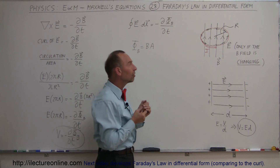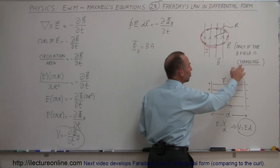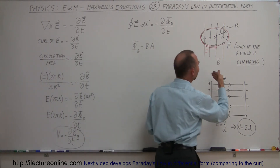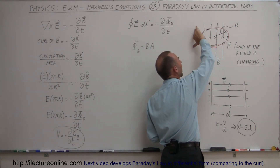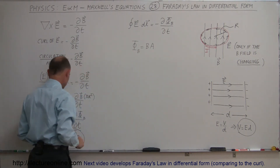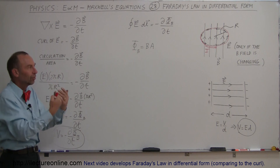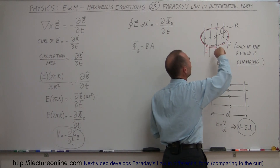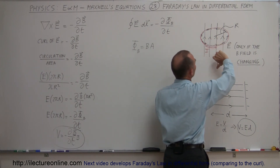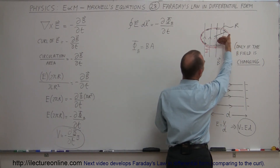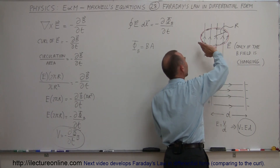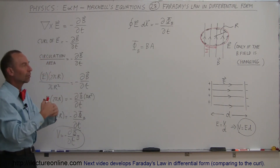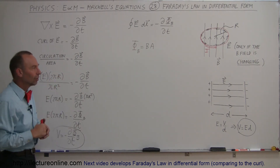We have to be careful about the orientation of the B field, because changing means the B field can be increasing or decreasing. If the B field is increasing, the current will actually go in the opposite direction — that's what the negative stands for. If the B field is decreasing, then the electric field will be oriented in the opposite direction. The negative indicates that the direction of the E field is opposite depending on whether the B field is increasing or decreasing.